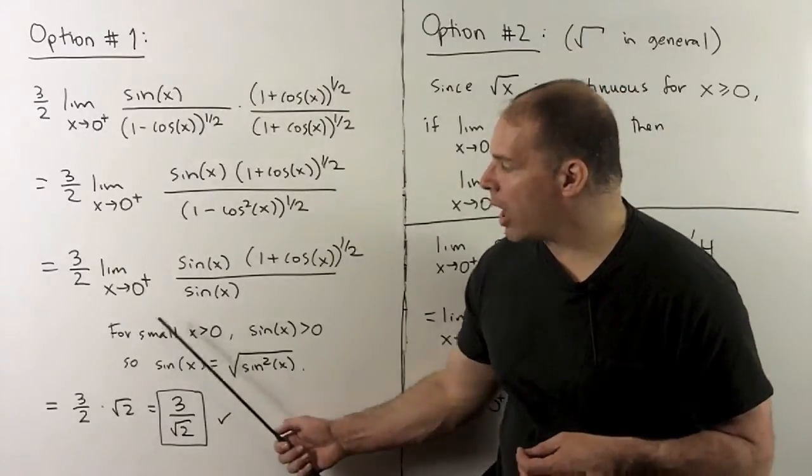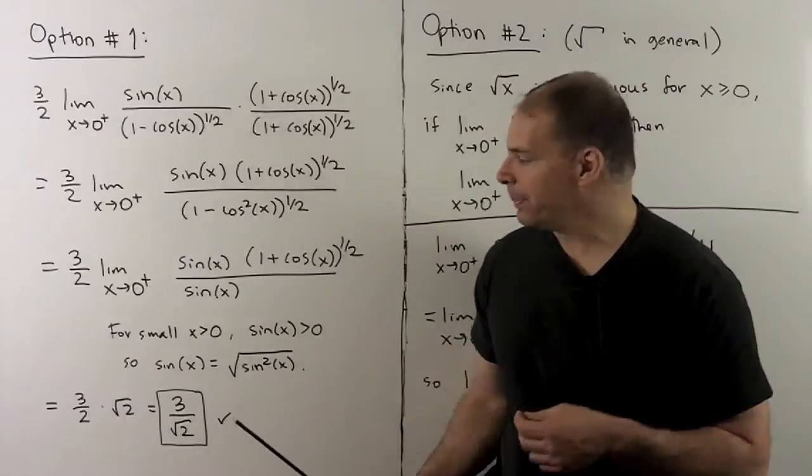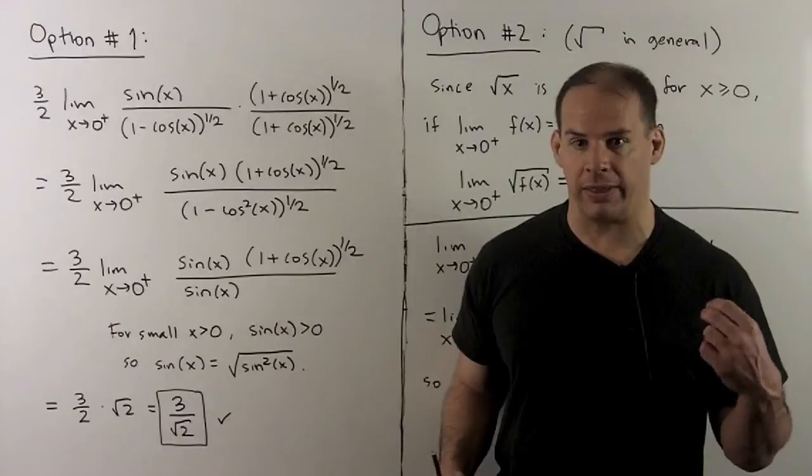Note, we're working with small positive x. So the sine will be positive, and then I can say sine is equal to square root of sine squared. There's no negative sign to worry about there.